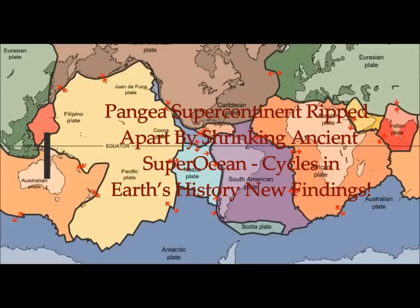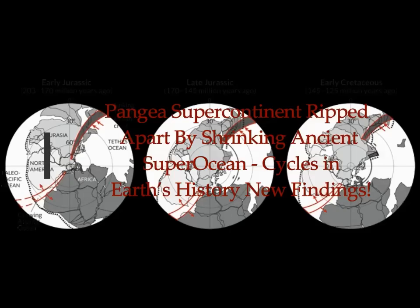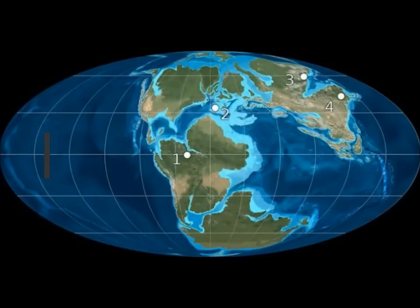Pangea supercontinent was ripped apart by a shrinking ancient superocean. This is what caused cycles in Earth's history and Earth's geology. The ancient ocean linked to supercontinents' break up. The shrinking Tethys ocean could have ripped Pangea apart.